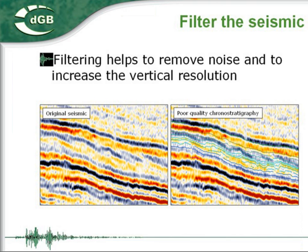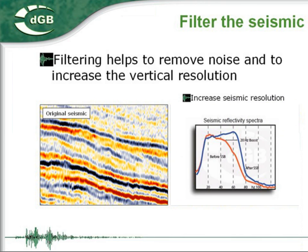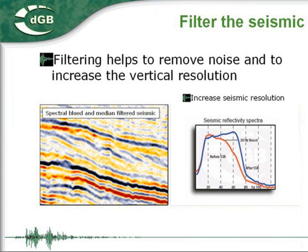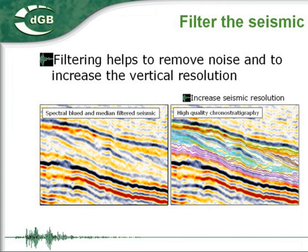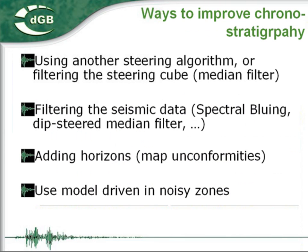Finally, to improve the grounor stratigraphy, we can also filter the seismic data itself. In this section, we see prograding events that are not picked up by the grounor stratigraphy. To improve the result, we apply spectral bluing followed by dip-steered median filtering. Spectral bluing increases the vertical resolution of the seismic data, and dip-steered median filtering removes random noise and enhances laterally continuous events. If we now recalculate the grounor stratigraphy on the filtered seismic data, we see that it indeed follows the prograding events as it should.